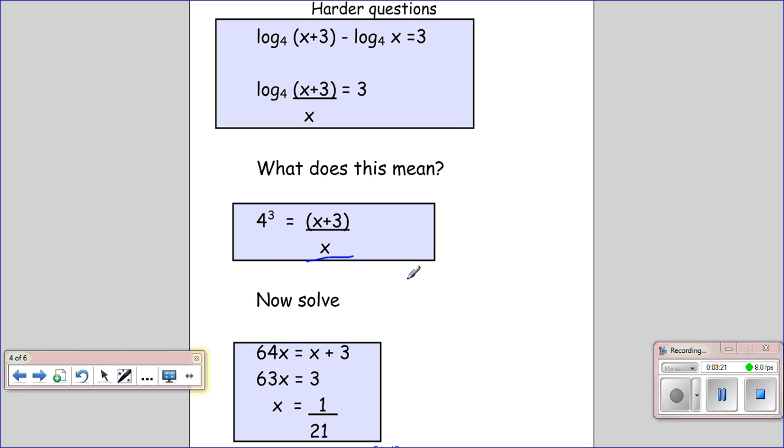Now we're just going to solve it like any other equation. We'll multiply it up by X and expand out our 4 cubed. So that will give us 64X equals X plus 3. We take X from both sides, so we get 63X equals 3. We divide by 63, and then we've canceled down, so we have X equals 1 over 21.